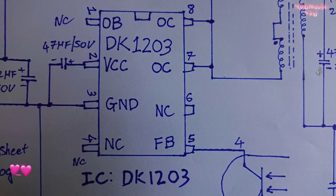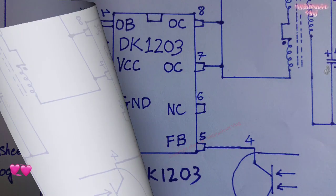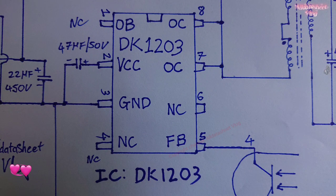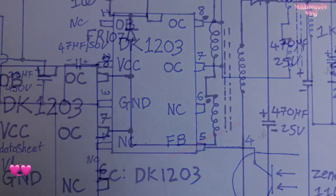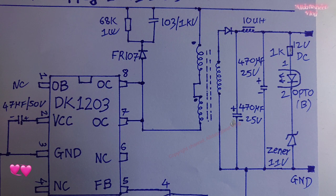With a built-in 700V high-voltage transistor, self-powered power supply, and integrated MOS circuit design, a lot of external components are saved. The transformer design is very simple — only two windings are needed for the transformer in the isolated output circuit.